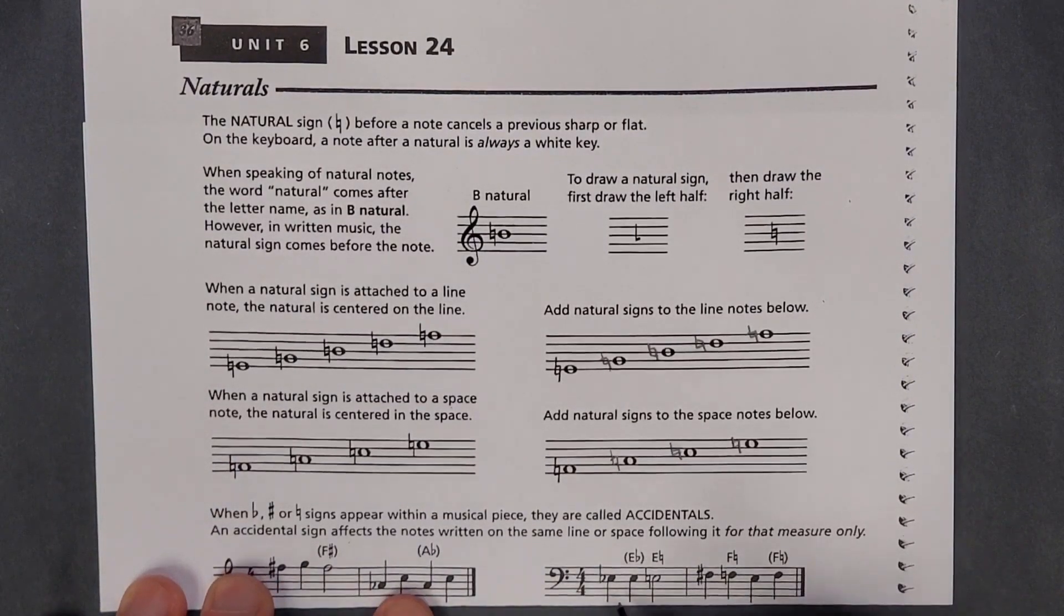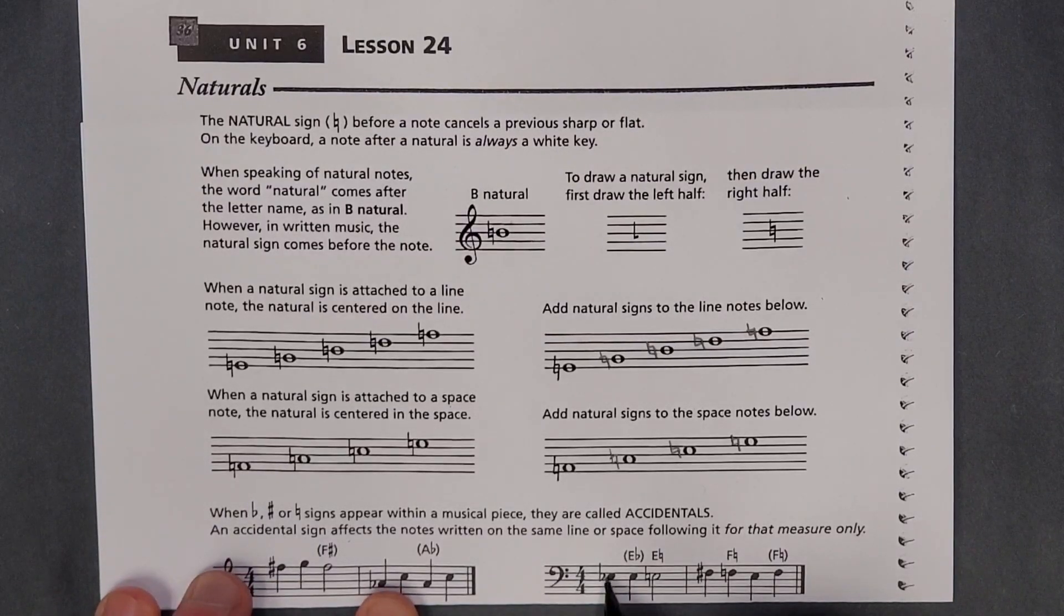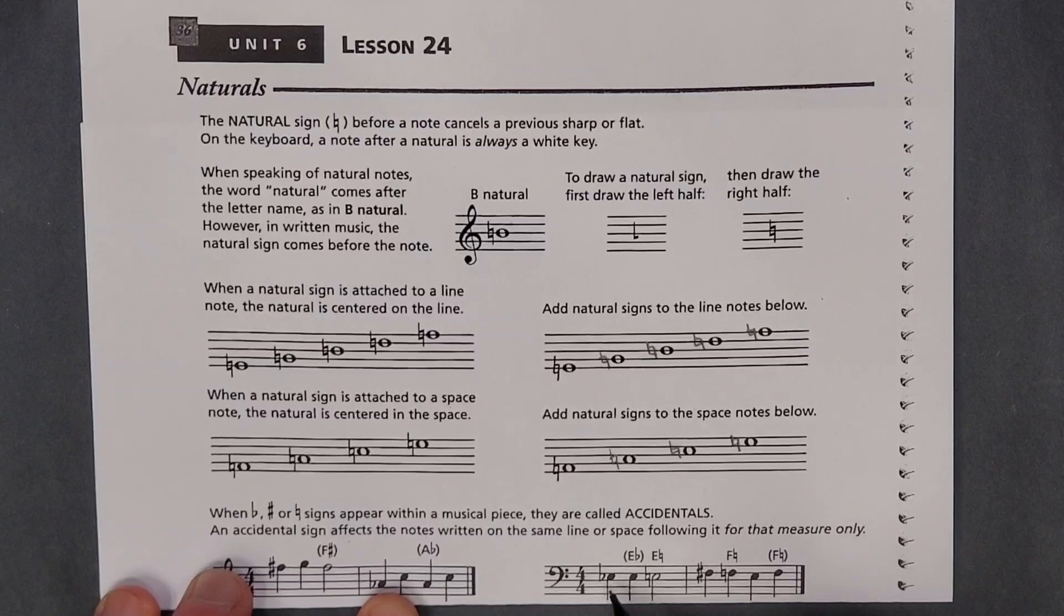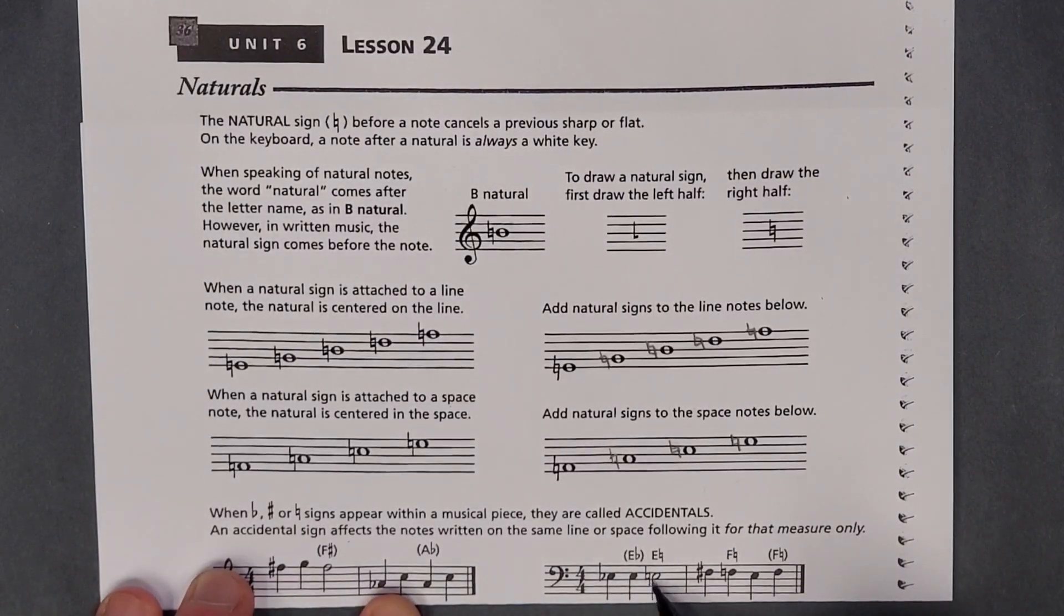So here, you have E flat. That would also be an E flat. But then if you wanted the pitch to go down, you would need to indicate that it was natural. You couldn't just put an E without a flat and expect someone to know that that was natural. You have to indicate, okay, it's no longer flat.